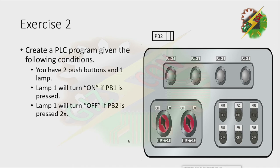Exercise 2: Create a PLC program given the following condition. You have 2 push buttons and 1 lamp. Lamp 1 will turn on if PB1 is pressed. Lamp 1 will turn off if PB2 is pressed 2 times. As you notice, this exercise is the opposite of our previous exercise. Now let's press PB1 — lamp 1 turns on. Now let's press PB2: 1, let's press PB2 again, and that's it.